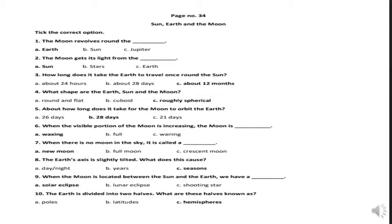Fourth one: what shape are the Earth, Sun and the Moon? Options are round and flat, cuboid, roughly spherical. Your correct answer is roughly spherical. Fifth one: about how long does it take for the moon to orbit the Earth? Options are 26 days, 28 days, or 21 days. Your correct answer is 28 days.